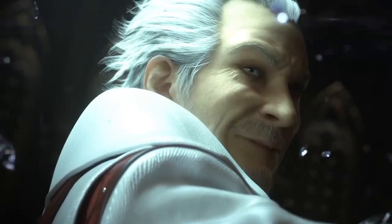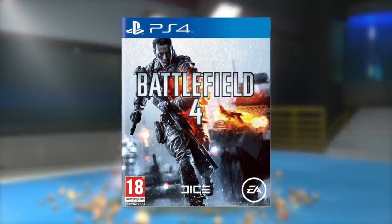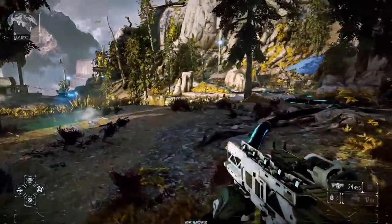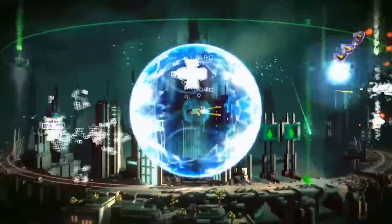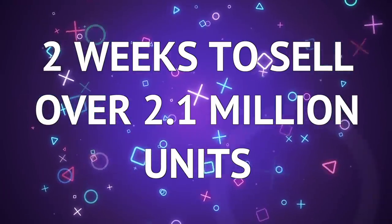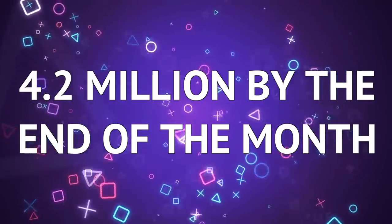What was particularly cool is they had a pretty big launch lineup. They didn't necessarily have a killer app, but they did have a few AAA games like Battlefield 4, Assassin's Creed 4, and a pretty good exclusive from Guerrilla Games in Killzone Shadow Fall. This was also filled out by a number of more indie-oriented games, but it was an overall pretty strong launch. It took them two weeks to sell over 2.1 million units, and by the end of the month they had sold 4.2 million.